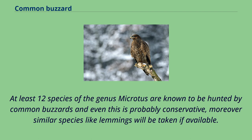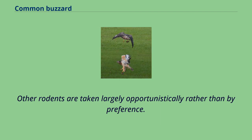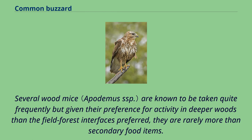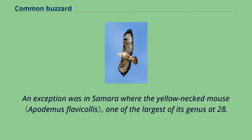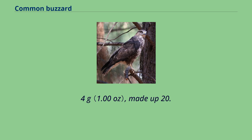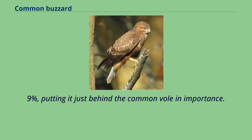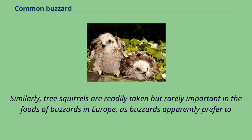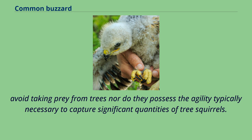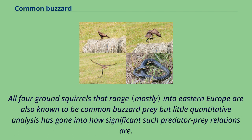Several wood mice are known to be taken quite frequently, but given their preference for activity in deeper woods, they are rarely more than secondary food items. An exception was in Samara, where the yellow-necked mouse, one of the largest of its genus at 28.4 grams, made up 20.9% of prey, putting it just behind the common vole in importance. Tree squirrels are readily taken but rarely important in the foods of buzzards in Europe, as buzzards apparently prefer to avoid taking prey from trees. Rodent prey taken have ranged in size from the 7.8-gram Eurasian harvest mouse to the non-native 1,100-gram muskrat.